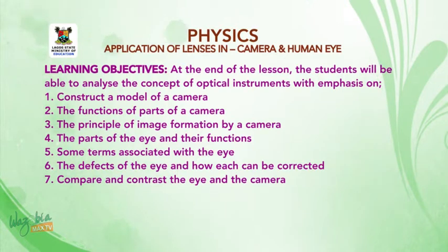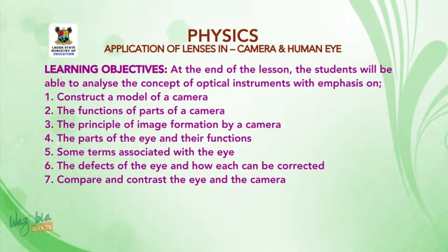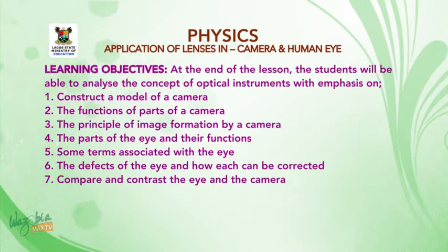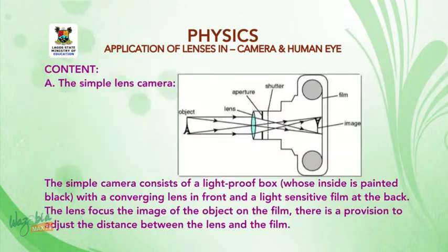The principle of image formation by a camera; the parts of the human eye and their functions; terms associated with the eye; the defects of the eye and how each can be corrected; and to compare and contrast the eye and the camera.